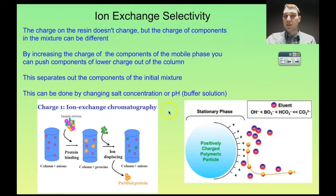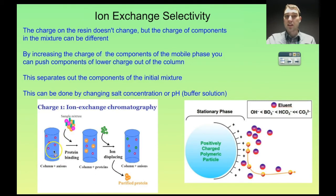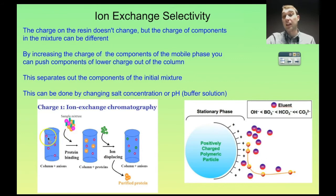If you increase the charge of the components in the mobile phase — the solution flowing through — you can push components with lower charge out of the column faster. They're not going to adhere as strongly to the stationary phase resin, so they will come out faster. We can do this by changing salt concentration or the pH of the solution flowing through, often called a buffer. For example, with a column that has negative charges in it, when we add a sample mixture with negatively charged proteins, an equilibrium is established between the proteins and the other anions sticking to the positively charged column.